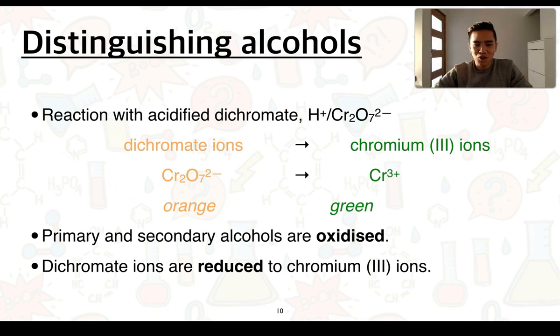So Cr2O7^2- to Cr^3+. Just as a bit of a recap, firstly we balance any atom other than hydrogen and oxygen. So we balance the chromiums. Next we balance the oxygens by adding the appropriate waters to the right side.